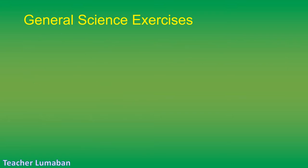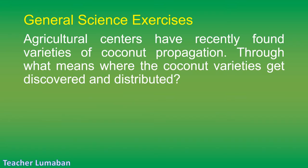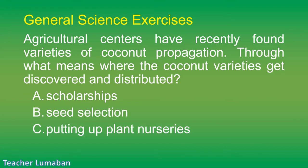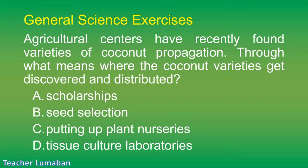Agricultural centers have recently found varieties of coconut propagation. Through what means were the coconut varieties discovered and distributed? Letter A: scholarships. Letter B: seed selection. Letter C: putting up plant nurseries. Letter D: tissue culture laboratories.